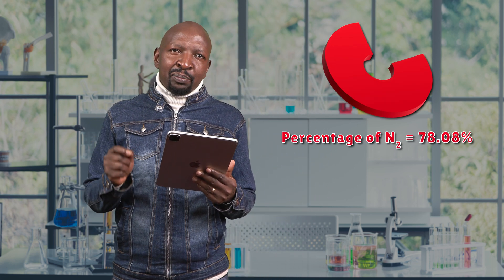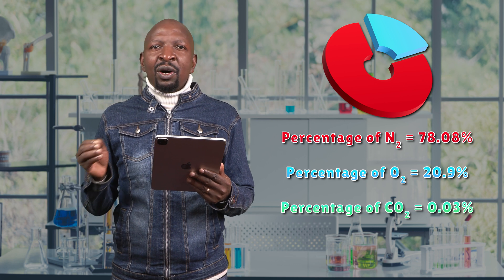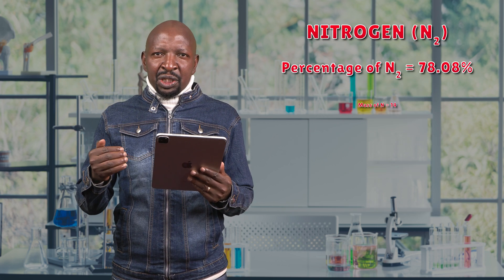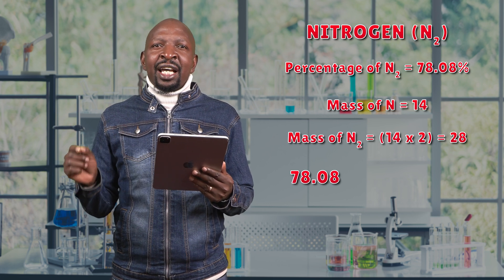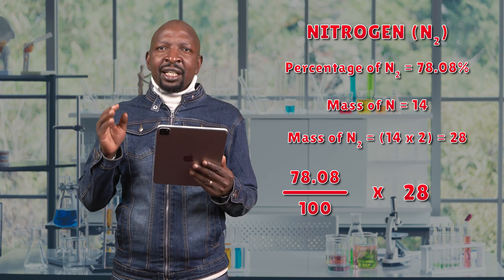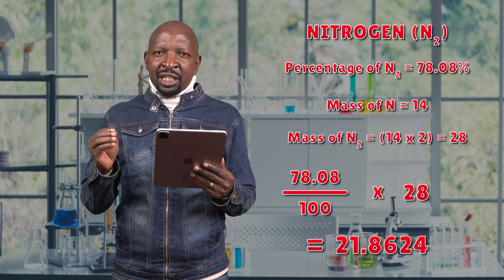We have nitrogen gas — the formula is N₂ because nitrogen is a diatomic gas, made up of two atoms, so its formula is N₂. The percentage composition of nitrogen in air is 78.08%. To find its mass contribution: 78.08 divided by 100, multiplied by the molar mass of nitrogen which is 28, gives you 21.8624 grams. So the mass contributed by nitrogen in air is 21.8624 grams.